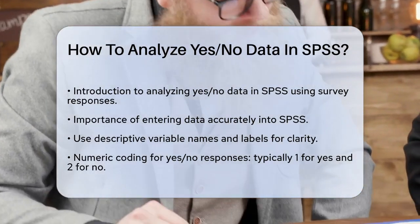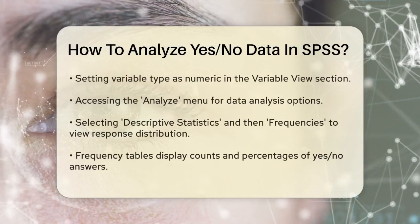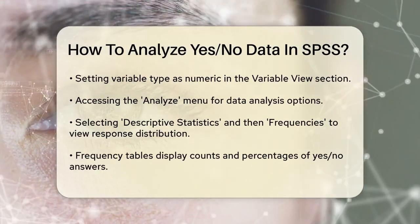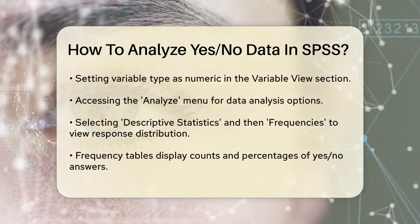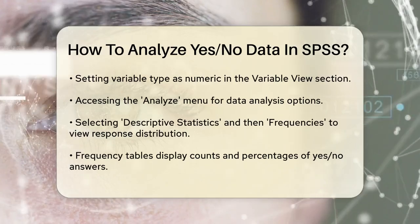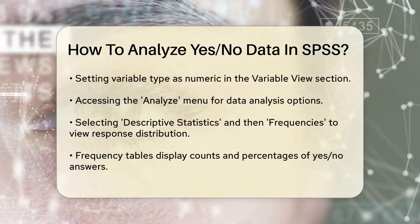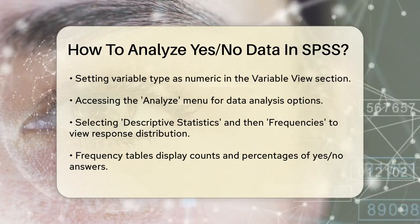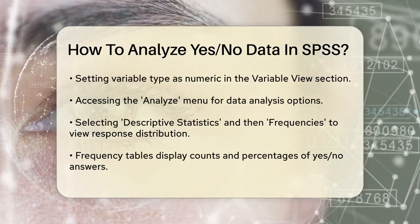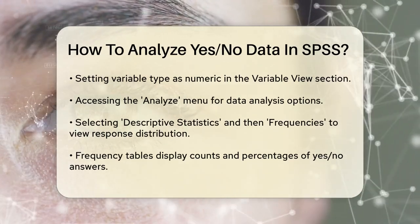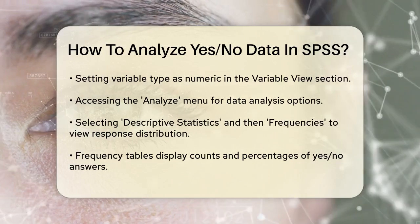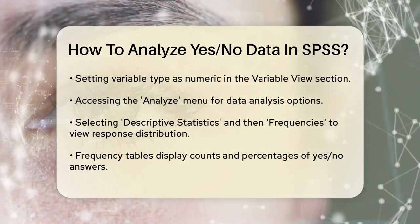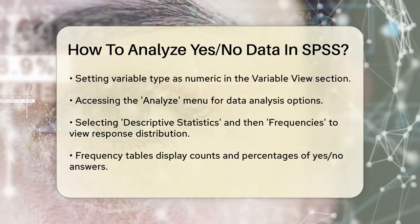Once your data is entered, you can start analyzing it. To see the distribution of yes and no answers, go to the Analyze menu, then select Descriptive Statistics, and finally choose Frequencies. This will give you a frequency table showing how many respondents answered yes or no to each question. You'll also see the percentages for each response, which can be very useful for understanding the data at a glance.